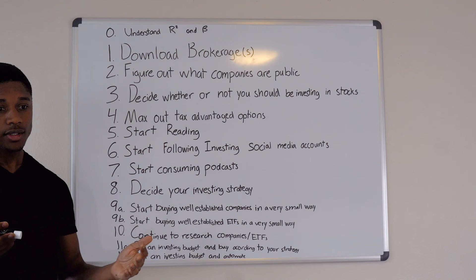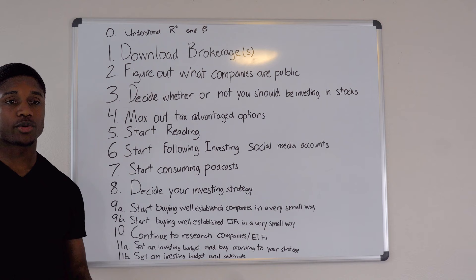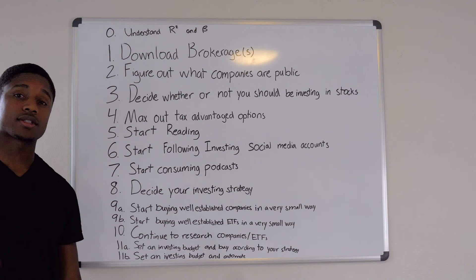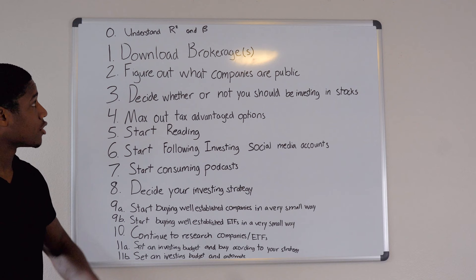If that stock is basically doing the same thing as the market, R-squared is going to be one. Beta, on the other hand, is how volatile a stock is. If the market goes up a certain amount and beta is positively correlated and greater than one, the key point is that if a stock is very volatile it's going to go up a lot more than the market.